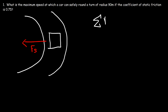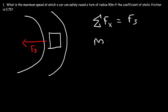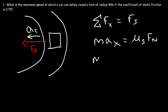The net force in the x direction is equal to the static frictional force — that's the only force acting in that direction. We know the net force is mass times acceleration, so it's ma. The static frictional force is mu_s times the normal force, and the acceleration towards the center is the centripetal acceleration, v squared divided by r.